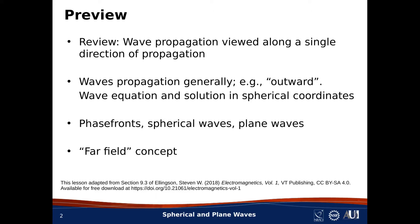In that talk, I explained how a wave propagates as viewed along a single direction of propagation. In this talk, we're going to discuss how waves propagate generally — that is, how the direction of propagation might vary as viewed from different locations in space. In particular, we know that waves radiate outward in all directions from a source, so we need to introduce some additional mathematics to deal with that.